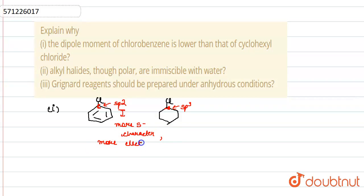So, it will donate less electron density in comparison to the other group. That's why we can say that electron density here is less in comparison to this group.